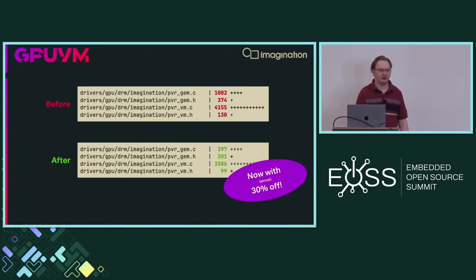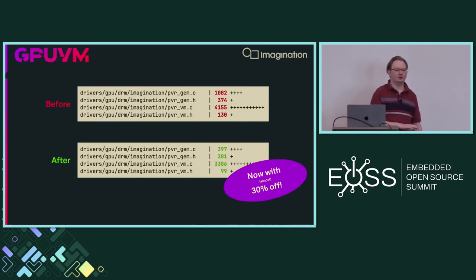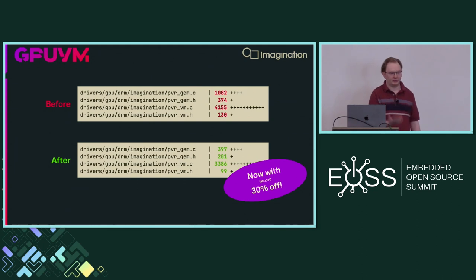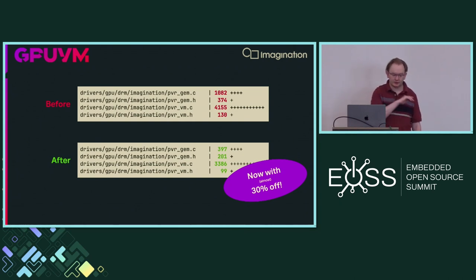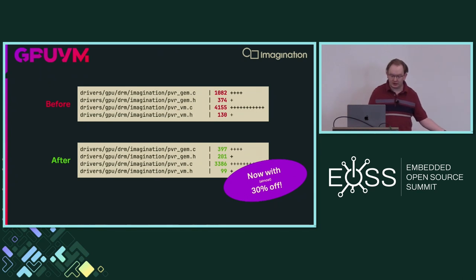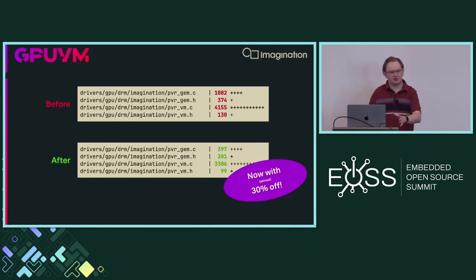The new functionality that GPU VM provided backed something that the Nouveau folks called VM bind — how all these complex operations like sparse binding and partial mapping were exposed to user space to allow Vulkan to take advantage of them. They looked at the existing solutions and said 'none of these are good enough, let's do something better so everyone can use it.' We have this fantastic memory manager — we were involved in development, and while GPU VM went through seven or eight patch iterations, we were able to test, review, and suggest changes as it was evolving.